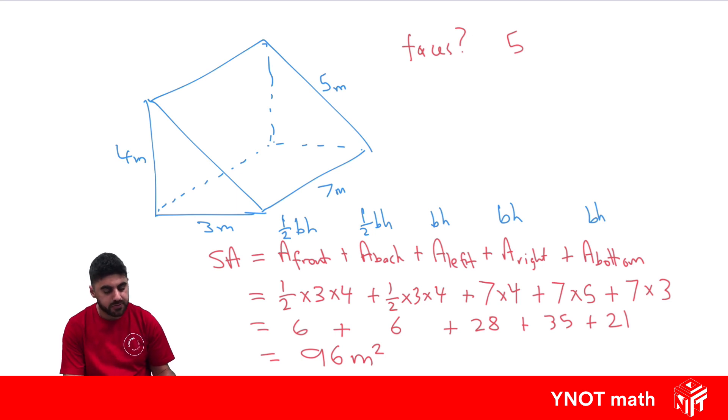Just make note that sometimes if you know that some shapes are the same, like this front triangle and the back triangle, you can find the area of one of them and multiply by how many there are, instead of finding them all separately and adding them together.